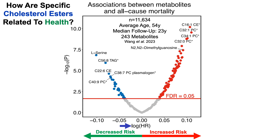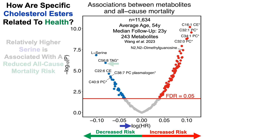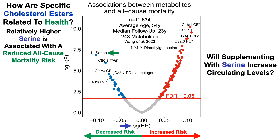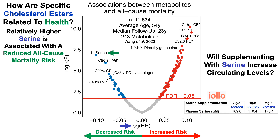Now, I know this is a cholesterol ester-focused video, but note that the metabolite significantly associated with the lowest all-cause mortality risk is the amino acid serine. If you're familiar with the channel, I've been supplementing with serine to try to reduce homocysteine — which raises the question: will supplementing with serine increase circulating levels as a strategy to potentially reduce all-cause mortality risk?